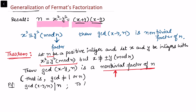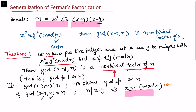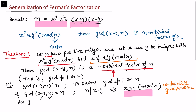Let us see the proof quickly. The gcd of (x minus y) and n certainly divides n. To show non-triviality, we need to show the gcd is not equal to 1 or n. First case: if gcd of (x minus y, n) equals n, then n divides x minus y, which means x is congruent to y mod n. But this contradicts our given condition that x is not congruent to plus or minus y mod n. So the gcd cannot be n.